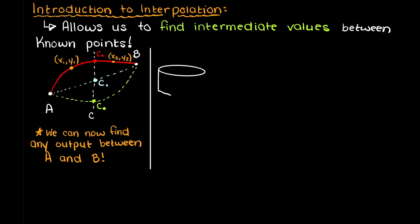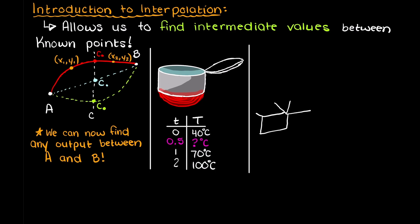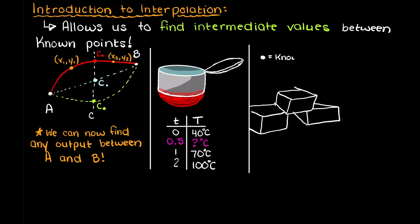Another way to visualize interpolation is if we have some table that shows the temperature of our pot of water over time at three time points. To find the temperature of our pot at time 0.15, we use interpolation. In general, we use interpolation to find missing data points the best we can.